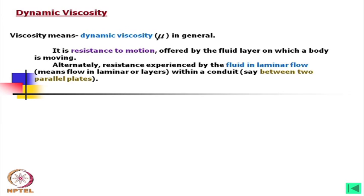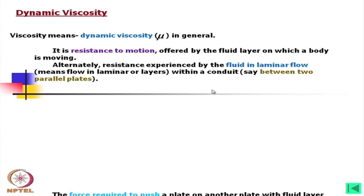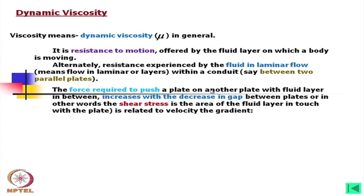Even when oil is moving inside a circular conduit — such as a pipe, a flexible hose, or a steel pipe — there will be a role of viscosity, particularly at the contact and also among the layers of the oil. The force required to push a plate on another plate with a fluid layer in between increases with the decrease in gap between the plates. In other words, the shear stress of the area of the fluid layer in contact with the plate is related to viscosity and the velocity gradient.